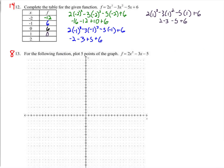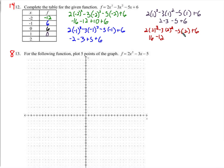For x equals 2: 2 times 2 cubed, minus 3 times 2 squared, minus 5 times 2, plus 6. 2 cubed is 8, times 2 is 16. 2 squared is 4, times negative 3 is negative 12. Negative 5 times 2 is negative 10, plus 6. 16 minus 12 is 4, minus 10 is negative 6, plus 6 is 0.